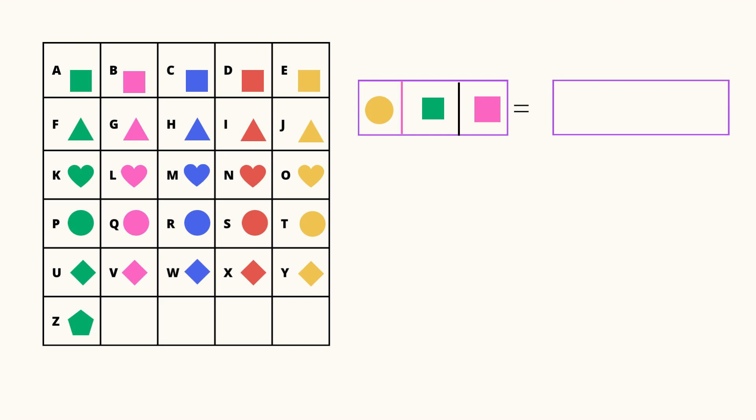Next one. Your turn. A yellow circle, green square, pink square. Yes, tab. T-A-B, tab.